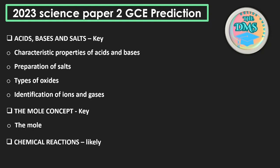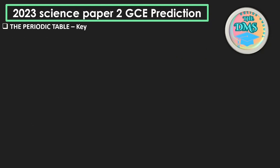Chemical reactions is not a key topic, but it is likely to come — it appeared last year and the year before. The probability of it appearing in Section B and Section C is lower, but in Section A multiple choice the probability is there. Under chemical reactions we have rates of chemical reactions, with many subtopics falling under that.